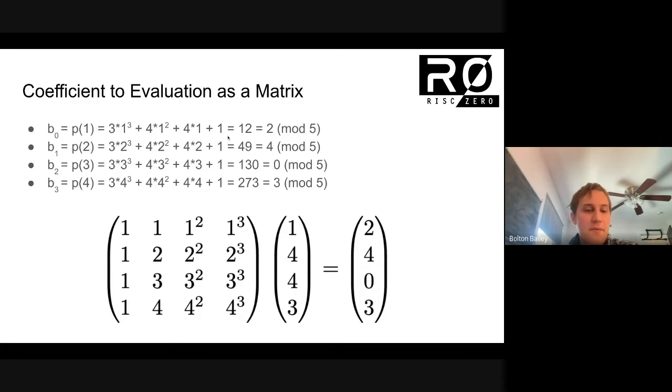So, we have ones all down the side here. We have 1, 2, 3, 4. We have 1², 2², 3², and 4². And we have 1³, 2³, 3³, and 4³. And so, we basically make a four by four matrix out of those numbers. And then if we multiply by this vector here, which represents the coefficients—these are the four coefficients of the polynomial in coefficient form—then doing this sort of matrix-vector multiplication, that is giving us exactly what we want. It's giving us the vector of evaluations.